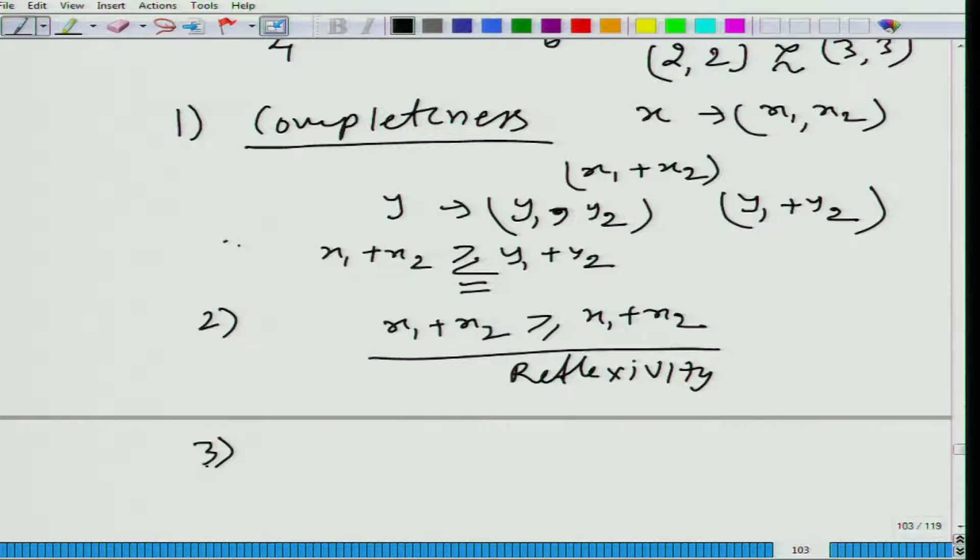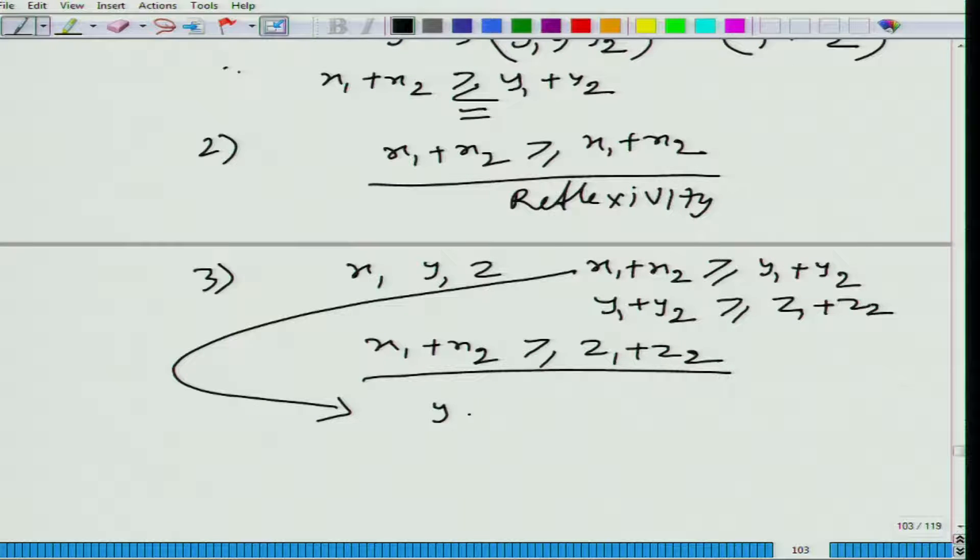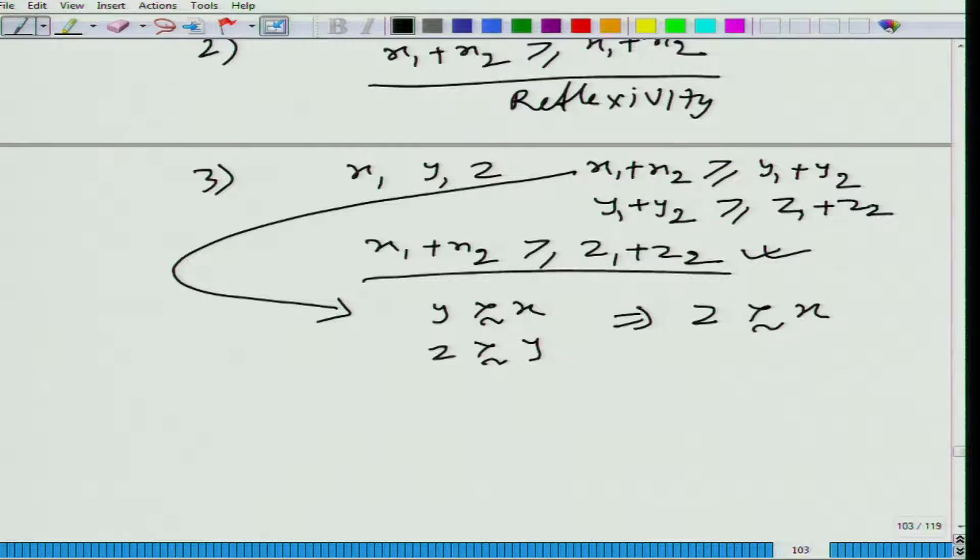When we take three bundles x, y, z, when x1 plus x2 is greater than or equal to y1 plus y2, and y1 plus y2 is greater than or equal to z1 plus z2, we will be able to figure out that x1 plus x2 is greater than or equal to z1 plus z2. What does the first one say? It says that y is at least as good as x. The second one says z is at least as good as y. By combining these two, we should get z is at least as good as x, and that is what we are getting from here. So it satisfies transitivity. By our definition, this person has rational preferences or this person is rational.